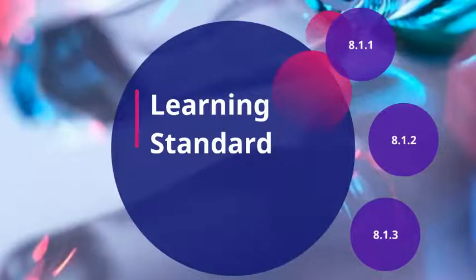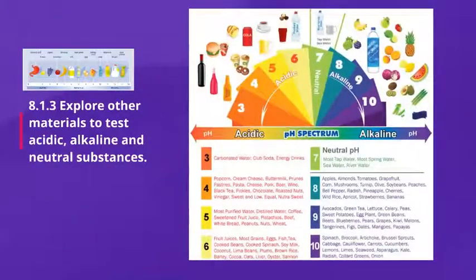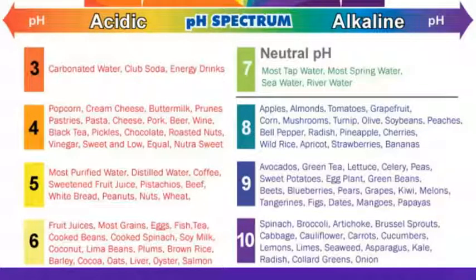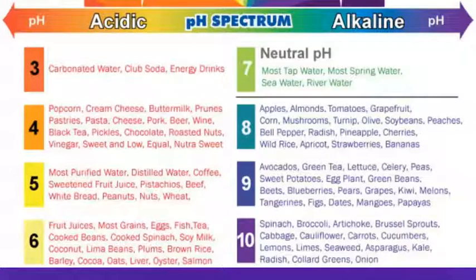Let's go to learning standard 8.1.3: explore other materials to test acidic, alkaline and neutral substances. Here are sample substances with their pH values: pH 3 — carbonated water; pH 4 — popcorn; pH 5 — most purified water; pH 6 — fruit juices; pH 7 — neutral, mostly tap water which is the drinking water we usually drink. pH 8 going to alkaline: apples, almonds, tomatoes, grapefruit and so on.